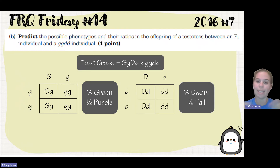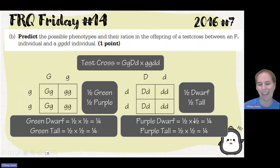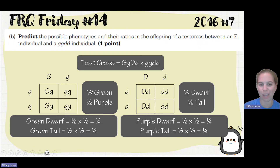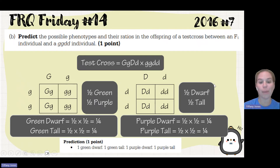We have to combine the two traits by multiplying their ratios. Green dwarf: one half times one half equals one fourth. Green tall: one half times one half equals one fourth. Purple dwarf: one half times one half equals one fourth. Purple tall: one half times one half equals one fourth. So you multiply the ratio for green with the ratio for dwarf to get green dwarf, and so on for all four combinations. Our resulting ratio is 1:1:1:1.